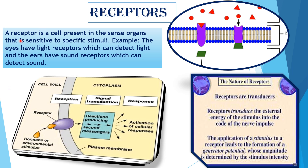A Receptor is a cell present in the sense organs that is sensitive to specific stimuli. For example, the eyes have light receptors which can detect light, and the ears have sound receptors which can detect sound. Here is a diagram of Receptor — the total diagram has been given.